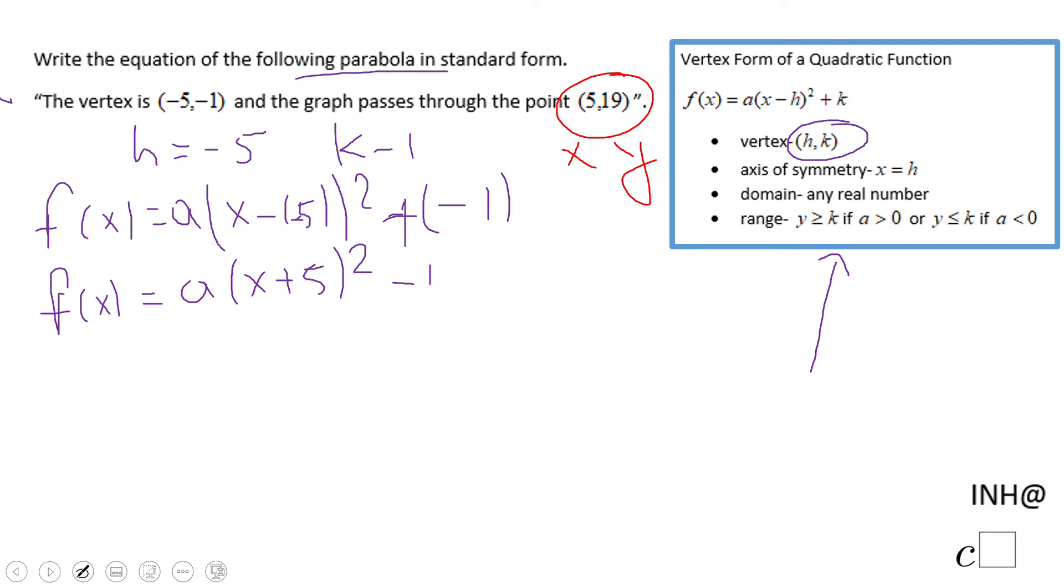So I'm going to put 19 equals a (not 5, because a is what we need to find) times (5 + 5) to the second power minus 1. If you notice, this is a simple equation: 19 equals... 5 plus 5 is 10, then squared is 100, so we have 100a minus 1.